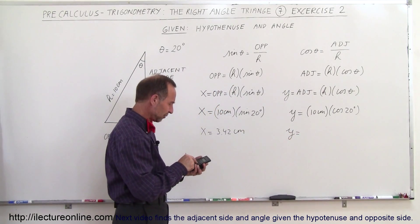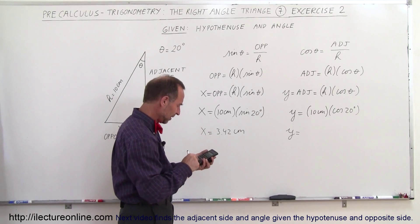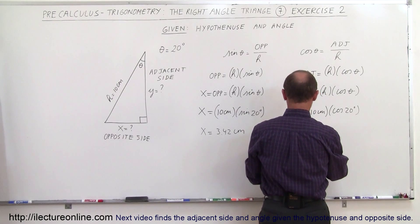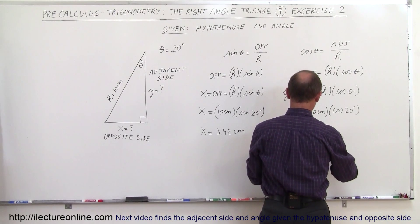We have 20. We take the cosine of 20 degrees, times 10 and we get 9 point, let's call it 9.40 centimeters.